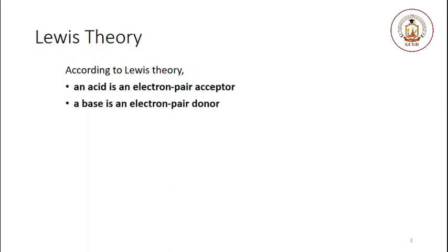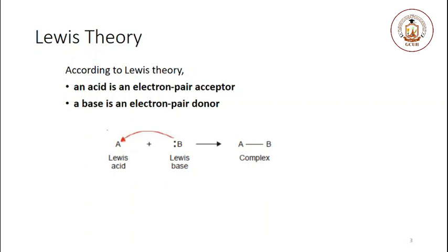According to Lewis theory, an acid is an electron pair acceptor and a base is an electron pair donor. If A represents the acid and B represents the base, the fundamental equation of the Lewis acid-base reaction can be written accordingly. Lewis pictured an acid and base as sharing the electron pair provided by the base, creating a covalent bond between the Lewis acid and Lewis base. The resulting combination is called a complex.